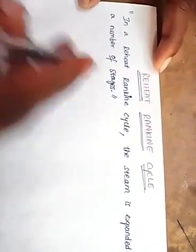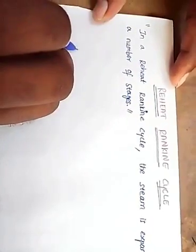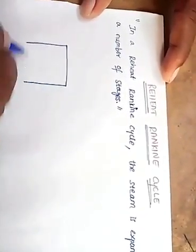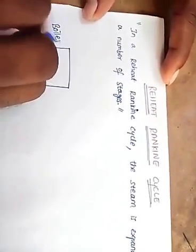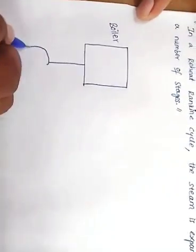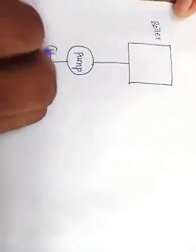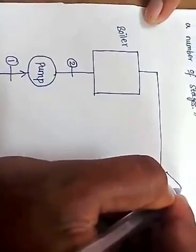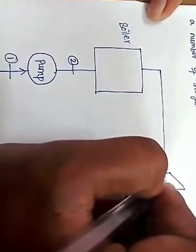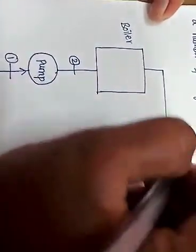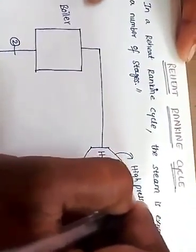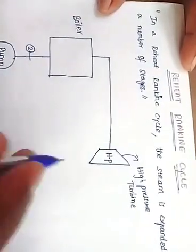I am going to draw a layout of reheat Rankine cycle. Same as simple Rankine cycle, the reheat Rankine cycle also contains a boiler and a pump, same as simple Rankine cycle. We have the pump here — from 1 to 2. After the boiler we have the turbine, same as simple Rankine cycle. This is the high pressure (HP) turbine.